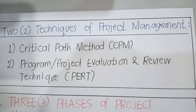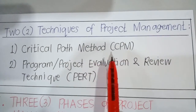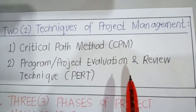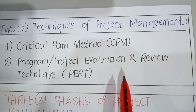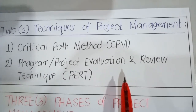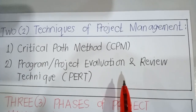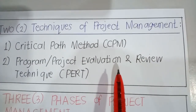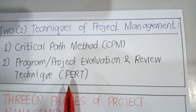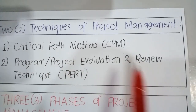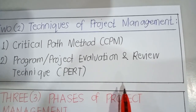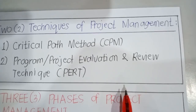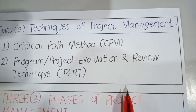CPM, or critical path method, is a network-based scheduling technique used primarily for industrial projects in which activity times are known. On the other hand, PERT — program evaluation and review technique — is a network analysis for planning or scheduling using probabilistic activity time, and is used to handle uncertainty in times.